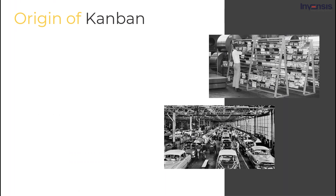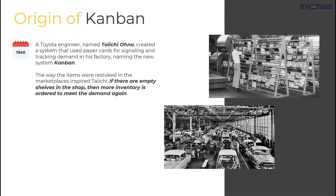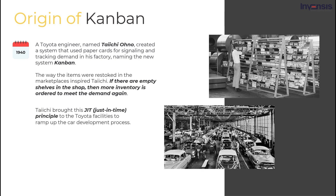Kanban is a highly visual way of executing Agile. Its origin dates back to the 1940s. A Toyota engineer named Taichi Ono created a system that used paper cards for signaling and tracking demand in his factory, naming the new system Kanban. Taichi noticed the way marketplaces are restocked — they have just enough supply to meet the demand. If there are empty shelves in the shop, more inventory is ordered to meet demand again. He then applied this just-in-time principle to Toyota facilities to ramp up the car development process. In 2004, David J. Anderson was the first to apply Kanban to IT and software development. Since then, the Kanban methodology has gained quite noticeable popularity.